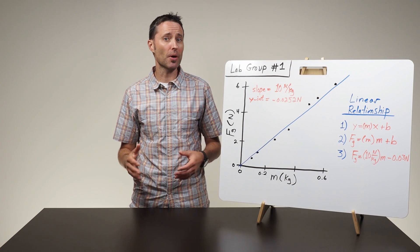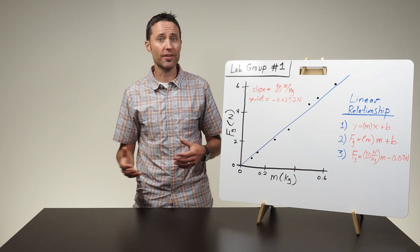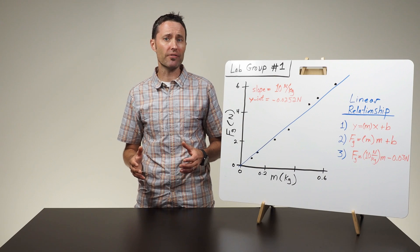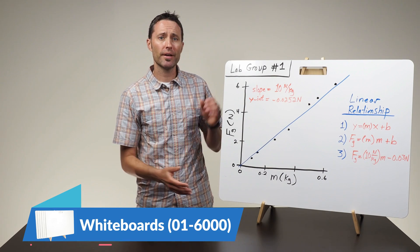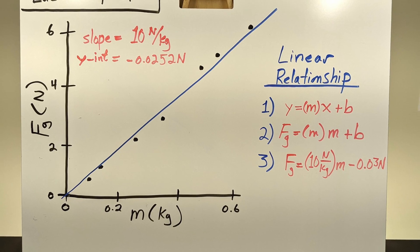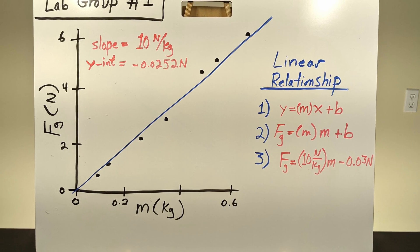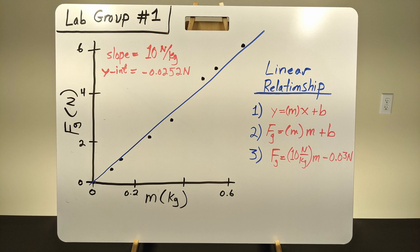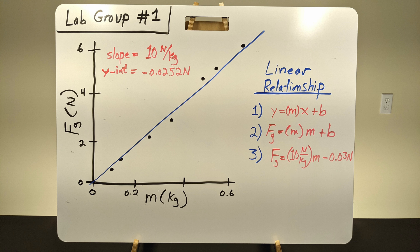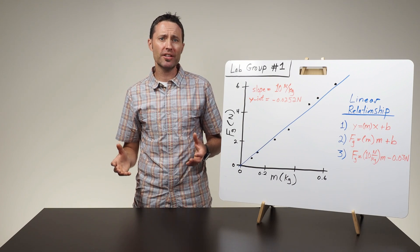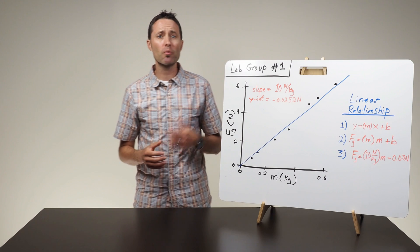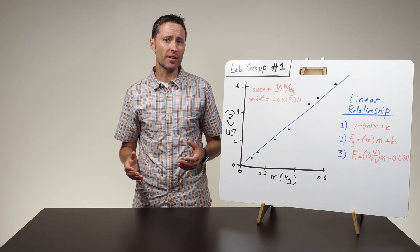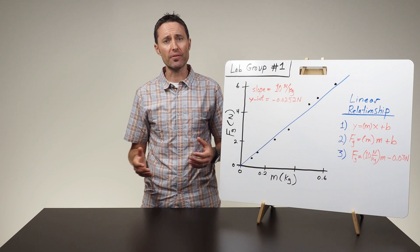Facilitate a whole class conversation about the relationship between the force of gravity on an object and its mass. Have each lab group record their graph and resulting equation on a large whiteboard. The whiteboard should include a graph of the collected data and the algebraic equation showing the relationship between the force of gravity on an object and its mass. Students should make sure to label each axis on their graph and include the value and units of measure for both the slope and y-intercept in their equation. Have the class circle up so that everyone can clearly see the graphs and equations on each whiteboard.